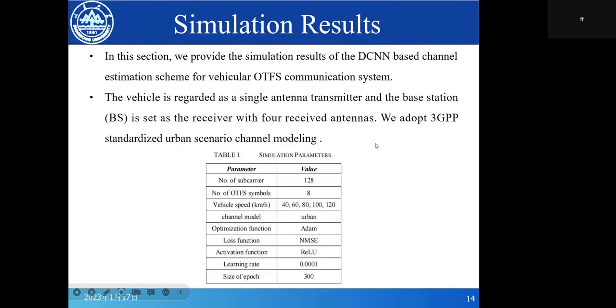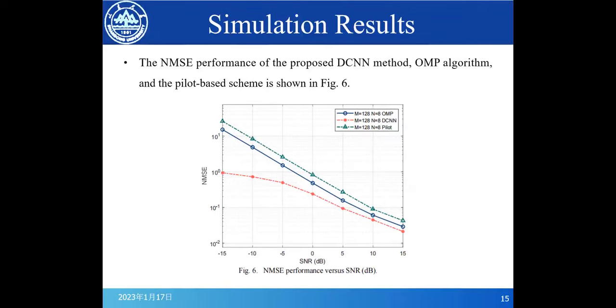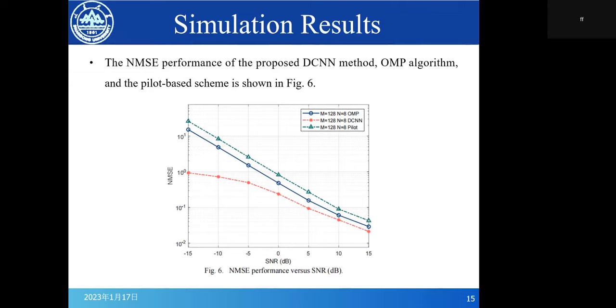In this section, we provide the simulation results of the DCNN-based channel estimation scheme for the OTFS communication system. The UE is regarded as a single antenna transmitter, and the base station is set as a receiver with four receive antennas. We adopt 3GPP standardized urban scenario channel model. Table 1 shows the detailed simulation parameters including number of subcarriers and OTFS symbols, vehicle speed, channel model, and all of these.